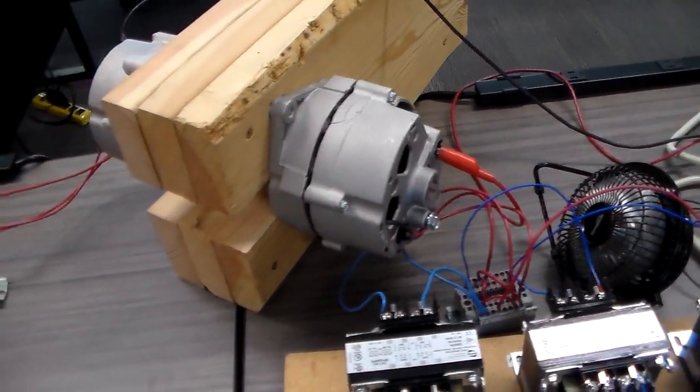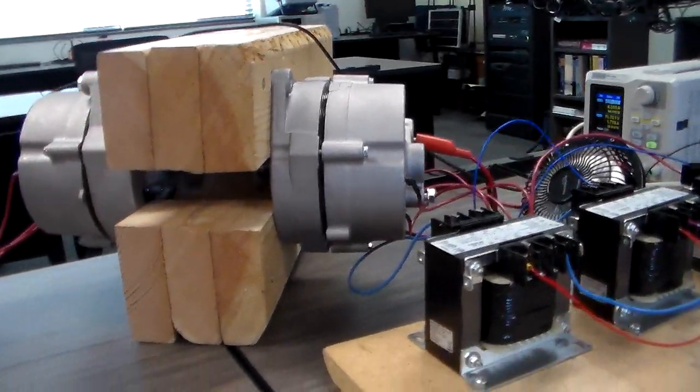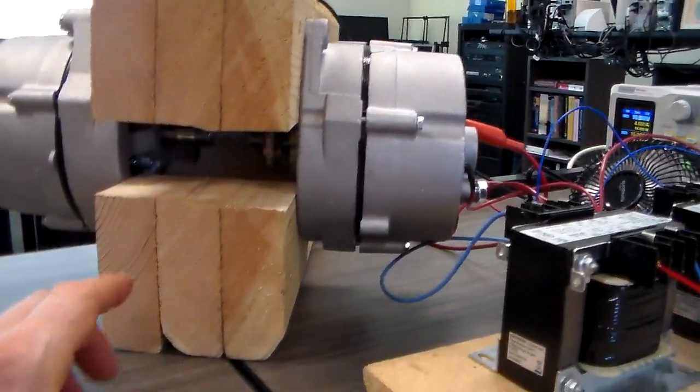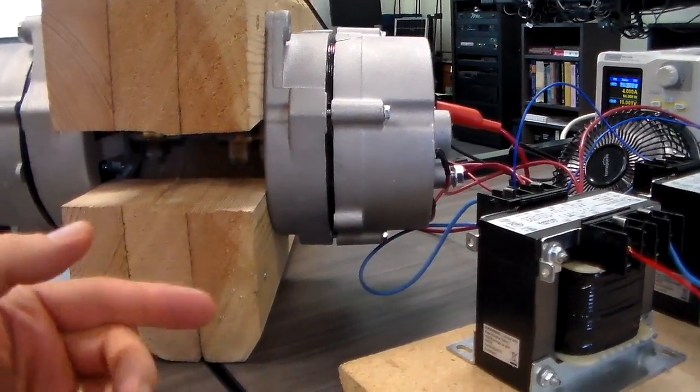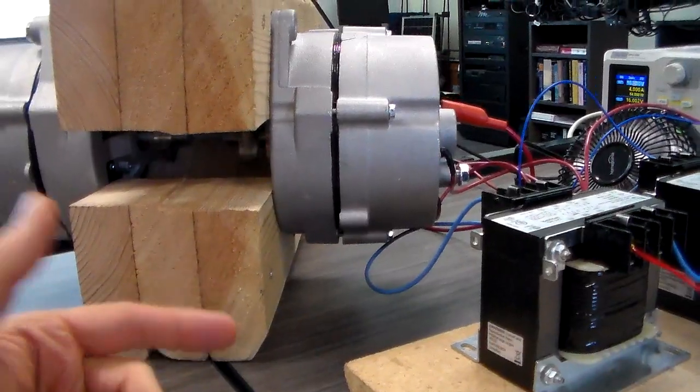Because we're spinning this very slow at 60 Hz, these being 14-pole machines, we're only spinning at about 514 RPM, so the amount of cooling they get from their normal centrifugal fans is pretty minimal.